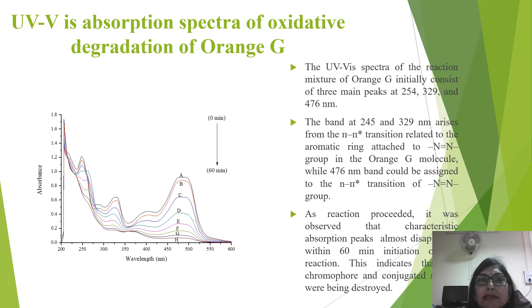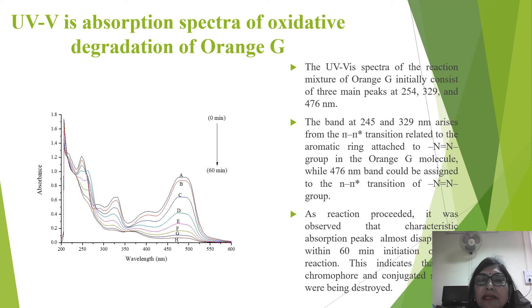This UV-visible spectra shows the degradation of RhB. RhB is used as a model dye for the degradation in the presence of nanoparticles. The UV-visible spectra of the reaction mixture initially consists of three main peaks at 254, 359, and 476 nanometers. As the degradation proceeds, it was observed that the characteristic absorption peaks almost disappeared within 16 minutes, which indicates the degradation of the chromophore and conjugated rings in the presence of the nanoparticles.